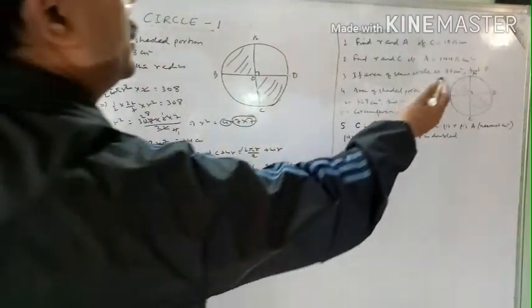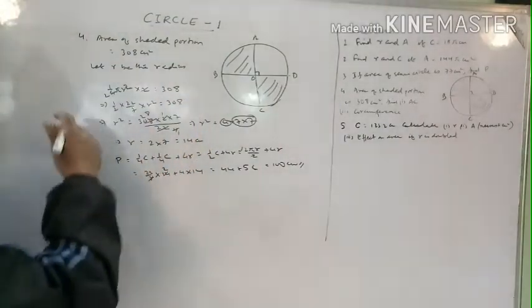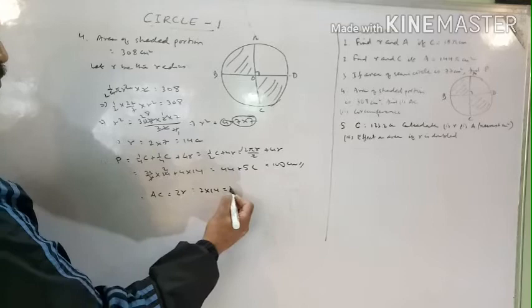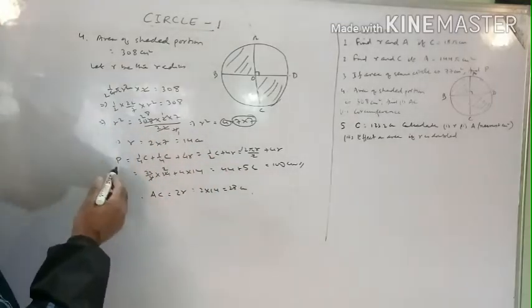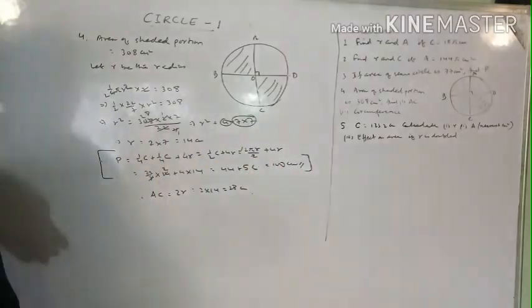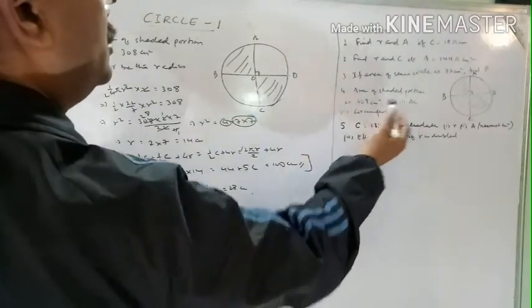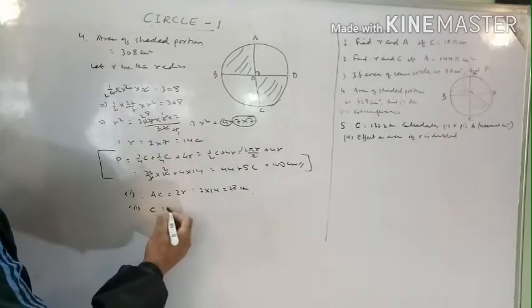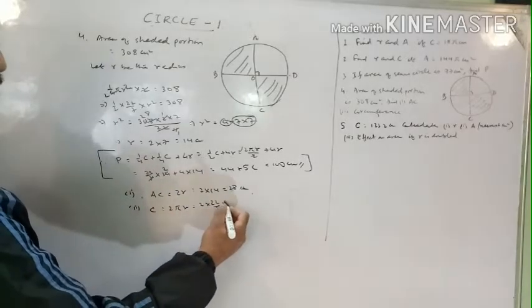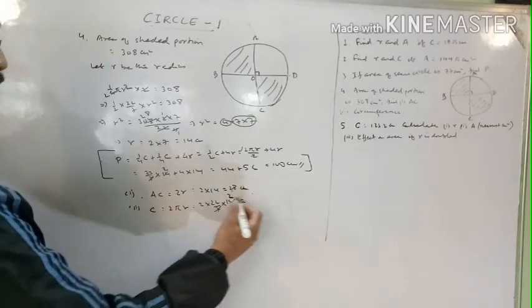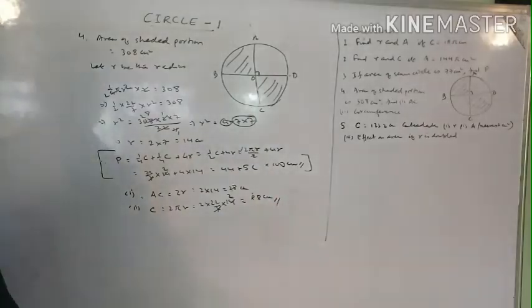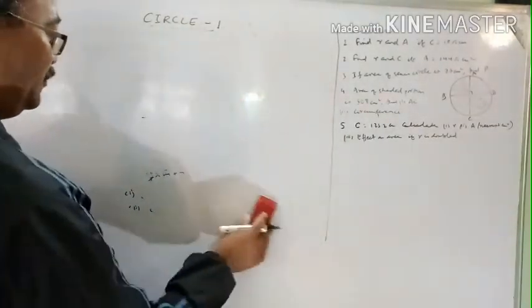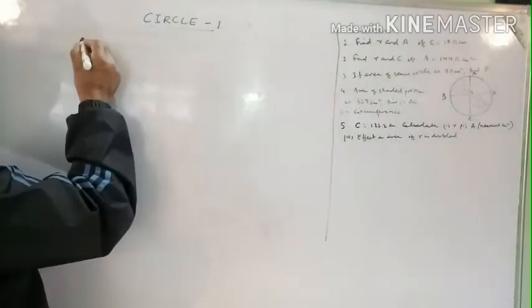AC is the diameter, so AC equals 2r equals 2 times 14 equals 28 centimeters. The circumference is 2πr equals 2 times (22/7) times 14; 7 cancels giving 2 times 2 times 22 equals 88 centimeters. So perimeter of shaded region is 100 cm, diameter AC is 28 cm, and circumference is 88 cm.